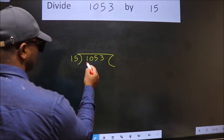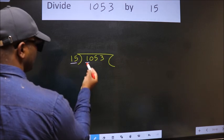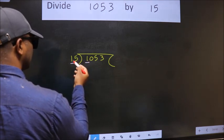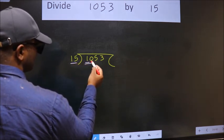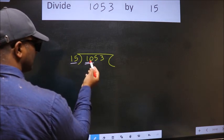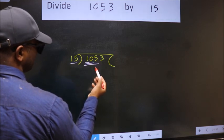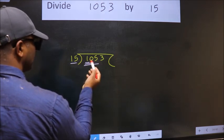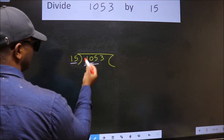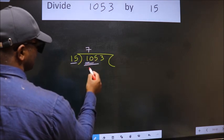Here we have 1, here 15. 1 is smaller than 15, so we should take two numbers: 10. 10 is still smaller than 15, so we should take three numbers: 105. When do we get 105 in the 15 table? 15 times 7 is 105.